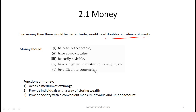Money was introduced to solve the inefficiency of barter trade. When looking at what money should do: it should be readily acceptable, have a known value, be easily divisible, have a high value relative to weight — gold works, but certain metals with low value relative to weight are impractical — and it should be difficult to counterfeit. Those are the basic characteristics of money.